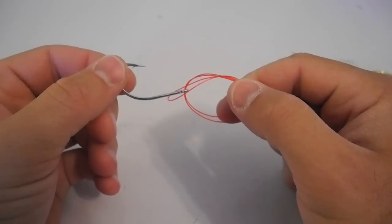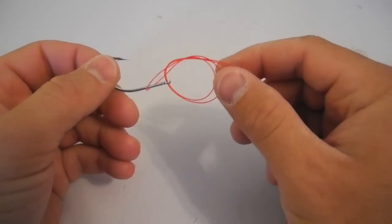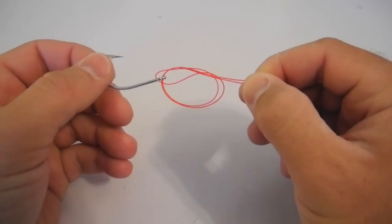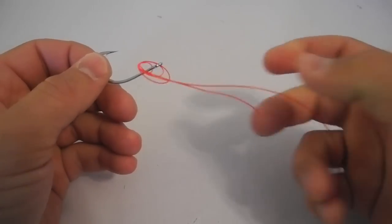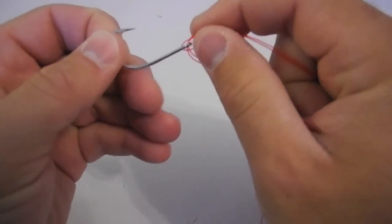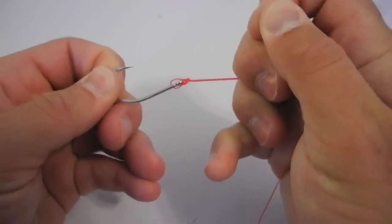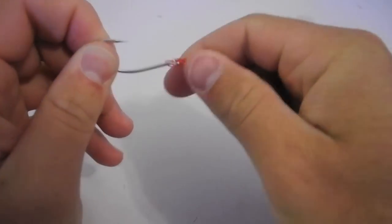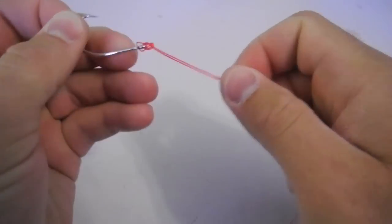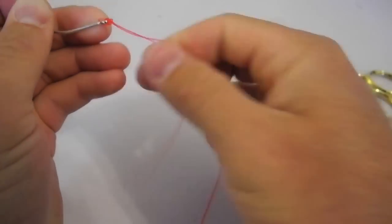Now all you have to do is you grab the tag end and the piece of tippet and you pull everything at once, close it all. Sometimes you have a little extra you have to close up.